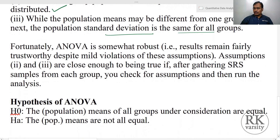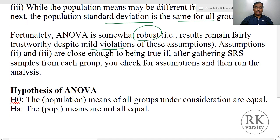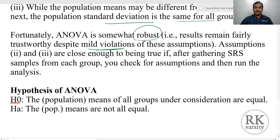Fortunately, ANOVA is somewhat robust — results remain fairly trustworthy despite mild violations of these assumptions. Even if there are slight violations, the results of ANOVA will be robust. Assumptions 2 and 3 are close enough to being true after gathering a simple random sample.